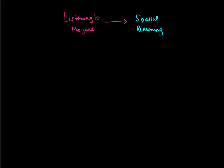The first one we're going to talk about is the idea of a mediating variable. What does mediator mean? When people have an argument, sometimes they need a go-between — somebody to try to make sense of and explain what's going on between the two parties. That's what happens with a mediating variable too.